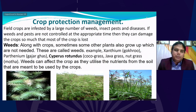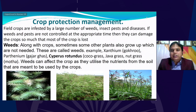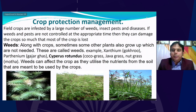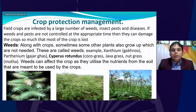We have discussed how to develop higher-yielding varieties of different crops, disease-resistant varieties, better irrigation facilities, and the use of different fertilizers and manures to increase crop yield. Today we will discuss the third part of this lesson, dedicated to crop protection management. Our field crops are infested by a large number of weeds, insect pests, and pathogens that cause disease. If weeds and pests are not controlled at the appropriate time, they can damage the crop so much that most of the crop is lost.